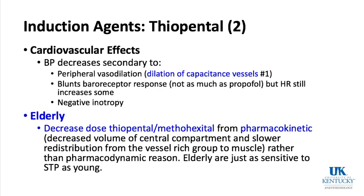Cardiovascular effects of thiopental: blood pressure drops through peripheral vasodilation and venodilation — preload and afterload decrease. It is a negative inotrope decreasing cardiac contractility. It doesn't blunt baroreceptors as much as propofol, so heart rate rises somewhat. In the elderly, we decrease the dose because of pharmacokinetic differences: decreased volume of the central compartment and slower redistribution from the brain to muscle — the drug stays in the brain longer.